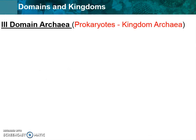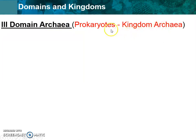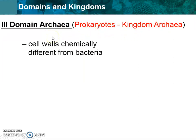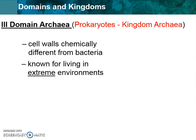The next type of domain is archaea. I like to think of archaea sounding like the word ancient. This is also a prokaryote, meaning no nucleus and very simple. It houses the kingdom archaea — so the domain and the kingdom are the same, which is easy to remember. Compared to the previous domain, the cell walls are a little different, though you don't have to memorize that difference right now.